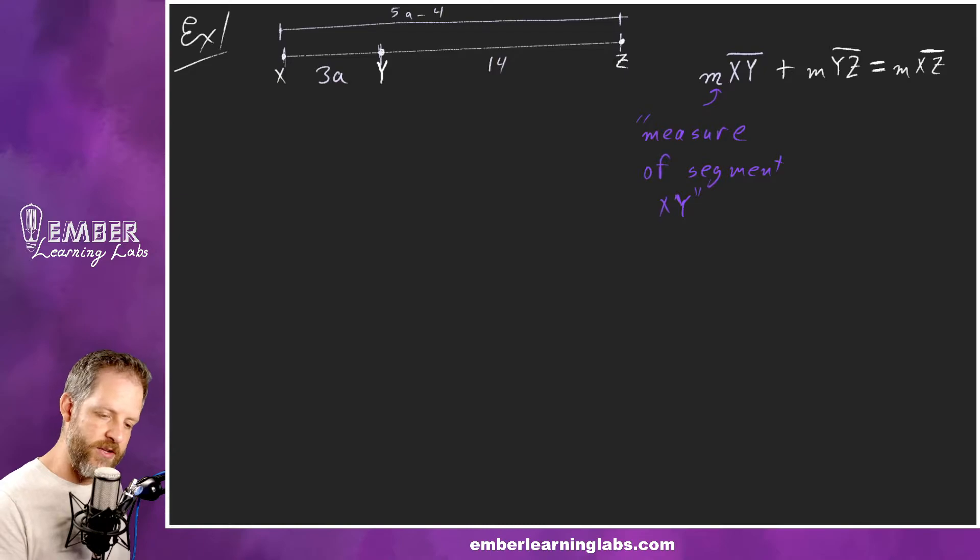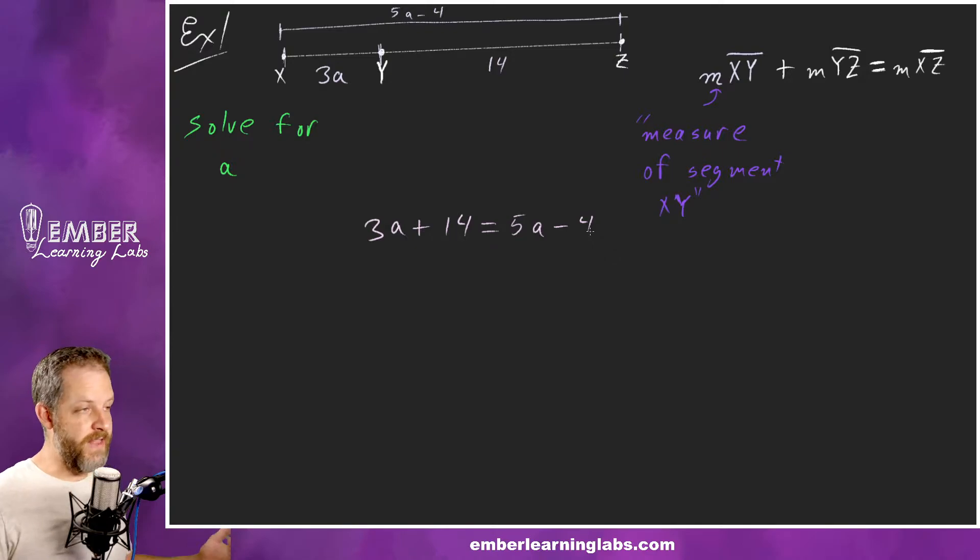In order to solve for a in this particular example we would do 3a plus 14 equals 5a minus 4. That's nice and easy. We just have one equation with one variable. We can solve that like it's nothing.